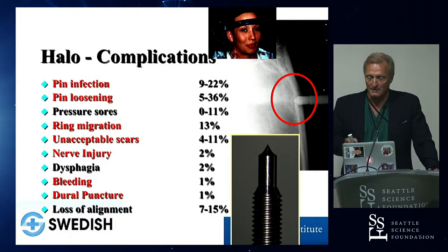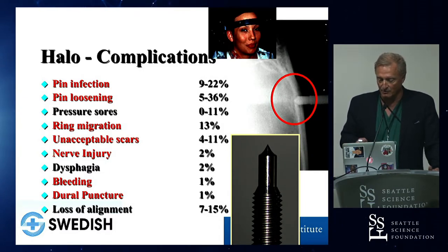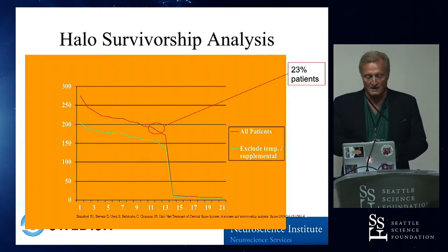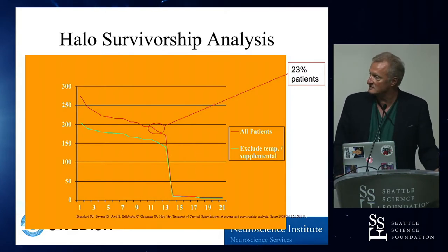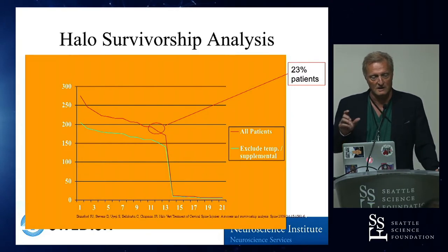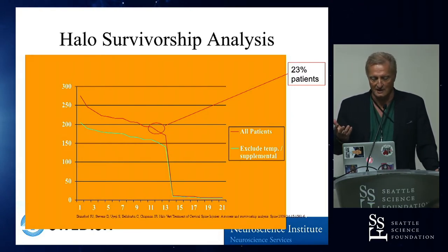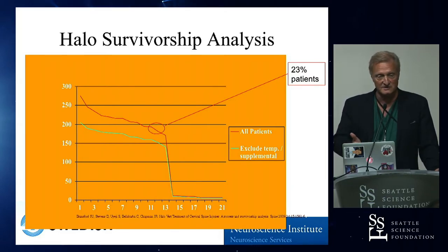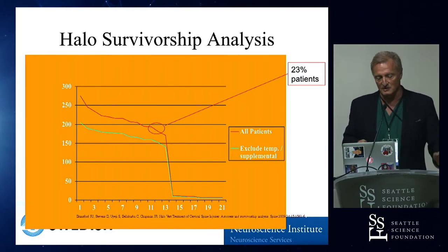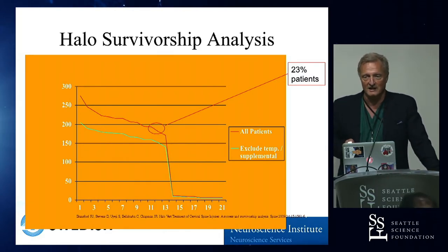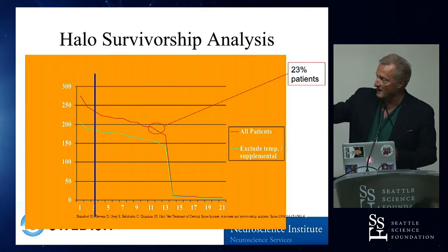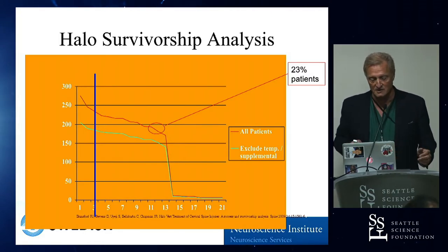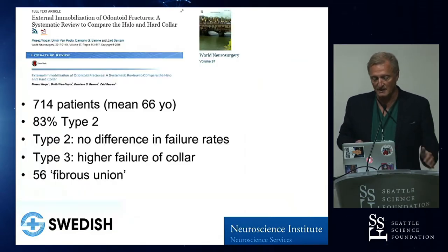The complications of halos have been vastly over-reported. In one of our studies through Rick Bransford, the most common problems are pin tract infections and loosening, by far. We did a survivorship analysis of almost 250 patients prospectively followed up, and we could identify that if you could deal with a halo and have good alignment for the first two weeks, your chances of completing treatment successfully were actually pretty high. Of course, you can't do this in a patient with severe kyphosis or ankylosing spondylitis — but if you made it past the first two weeks and the halo stayed in place and everything was good, you had a reasonably good chance of success to make it to three months.